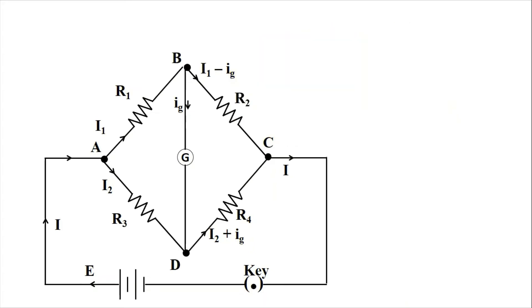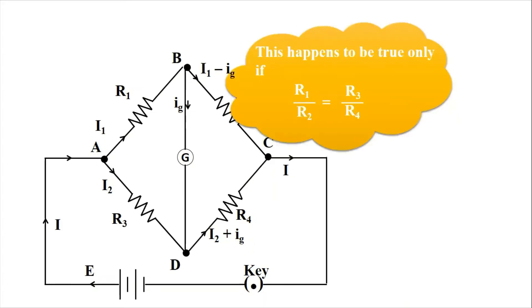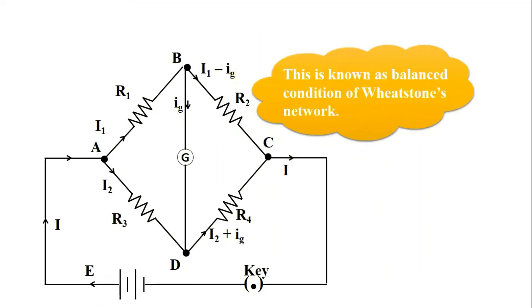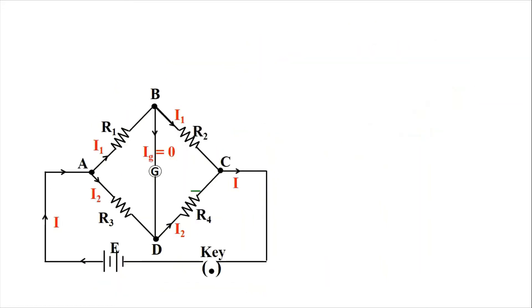This condition is possible only when we get: R1 by R2 equals R3 by R4. Now let me prove this — let's see the proof.